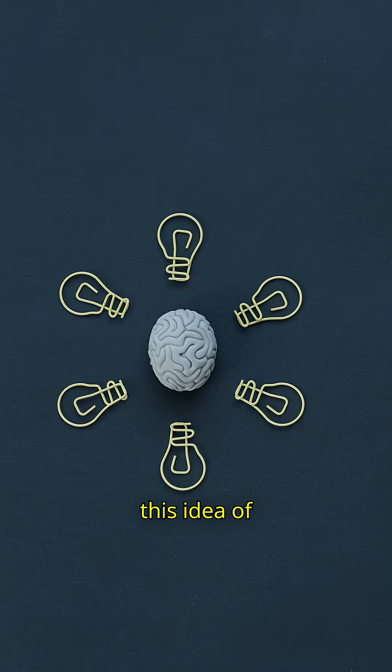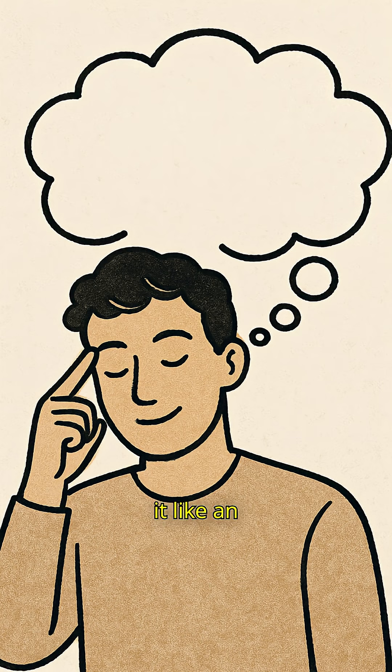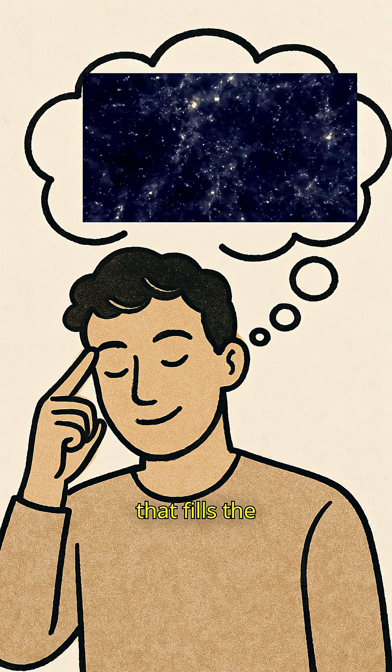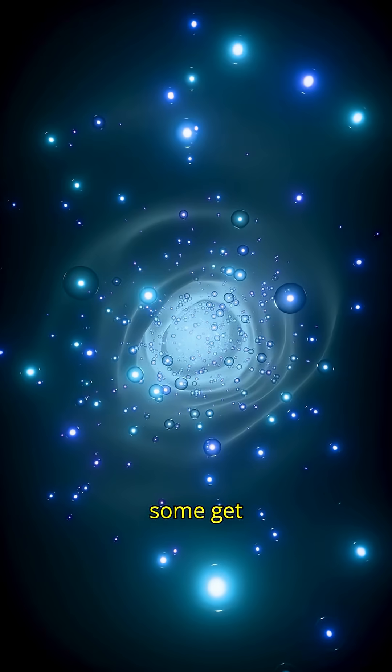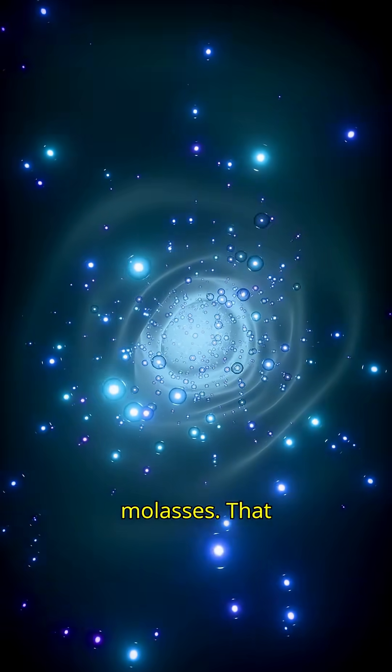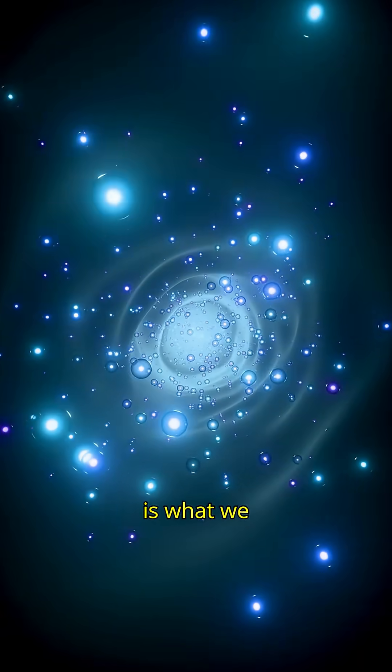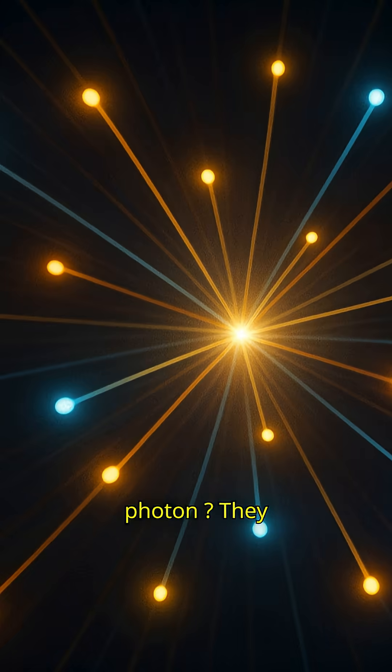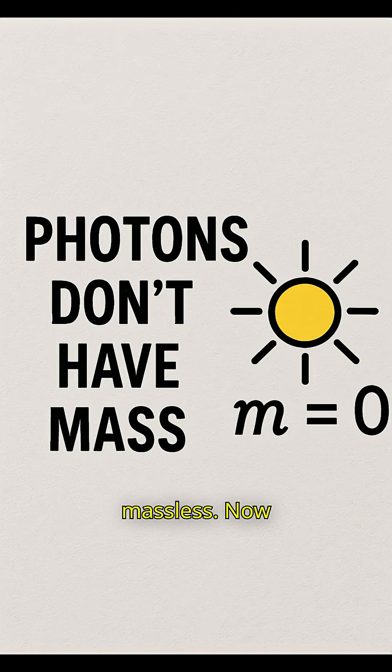The solution was this idea of the Higgs field. Picture it like an invisible energy jelly that fills the whole universe. As particles move through it, some get slowed down, kind of like pushing through molasses. That slowing down is what we call mass. Photons just glide straight through, which is why they're massless.